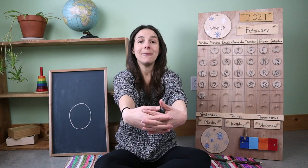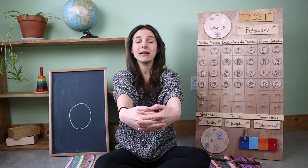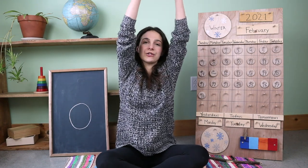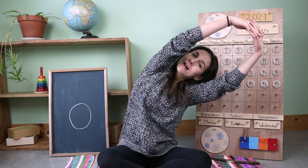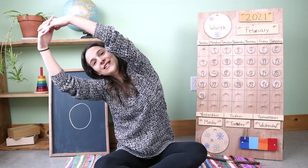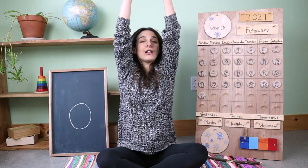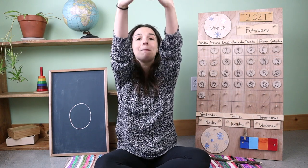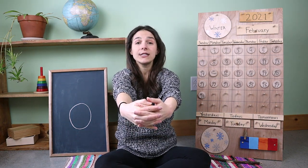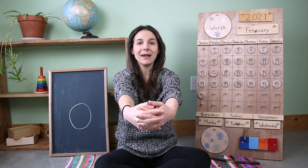Let's make our arms into a big circle out in front of us like this. Now let's bring that circle up, up, up, and give a little stretch. Stretch from one side over to the other side, back to the middle. Now let's bring that circle back down in front of us like this. And now it's time to sing. If you know the words, will you sing along with me?